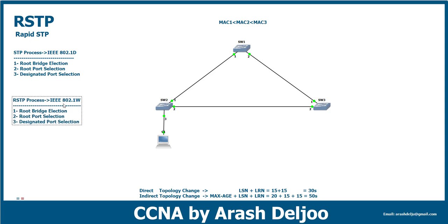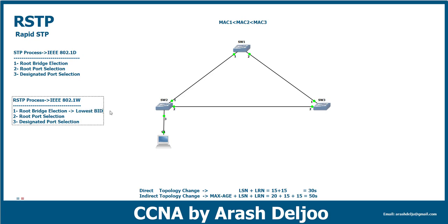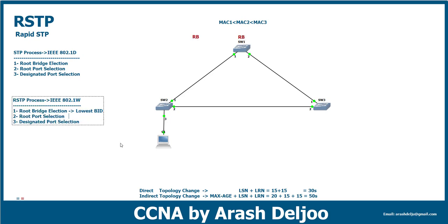How does RSTP create a loop-free network just like STP? In RSTP we have the same three steps. The first step is root bridge election — we elect the root bridge according to the lowest bridge ID, exactly the same concept. Assuming switch one, switch two, and switch three: the MAC of switch one is lower than switch two and switch three, so switch one is the root bridge.